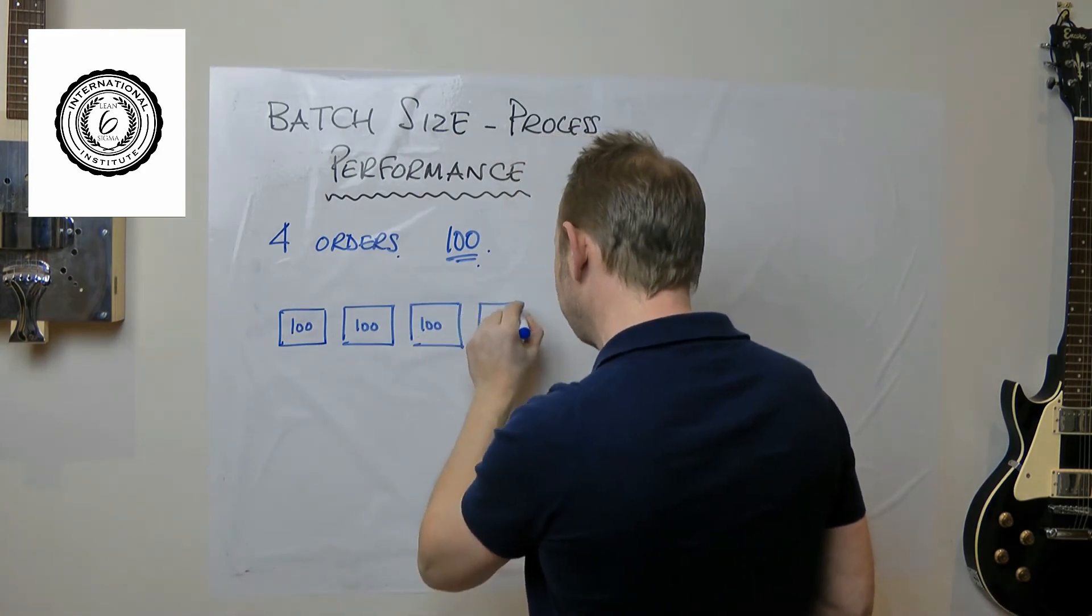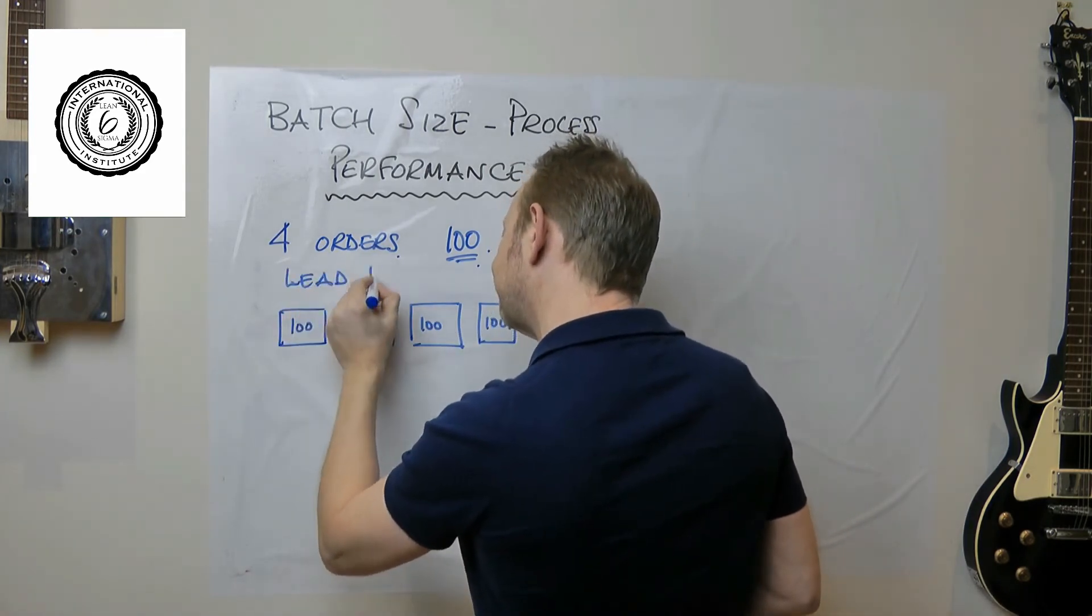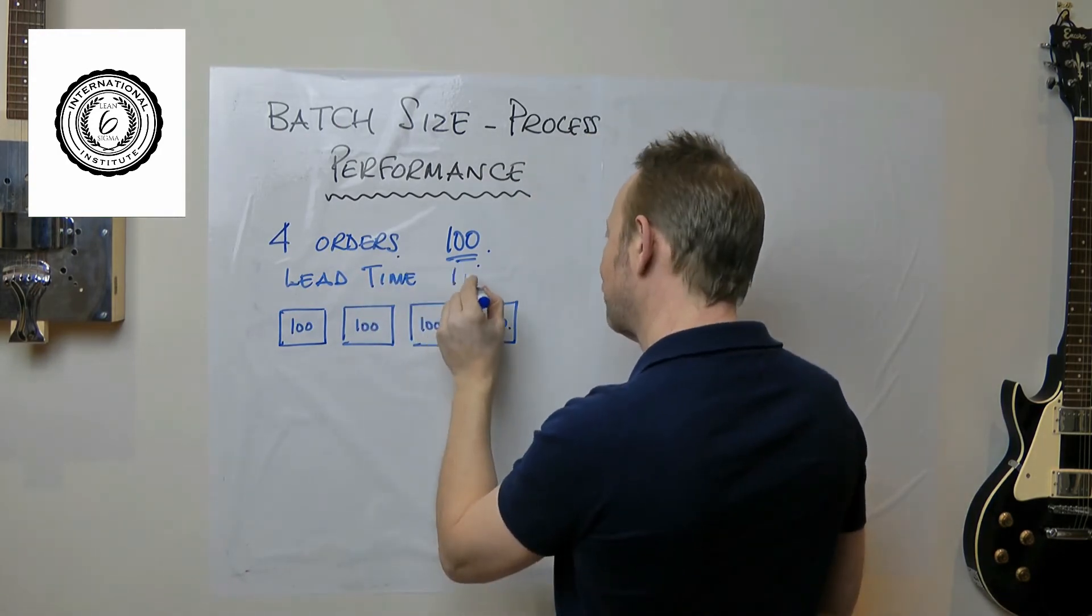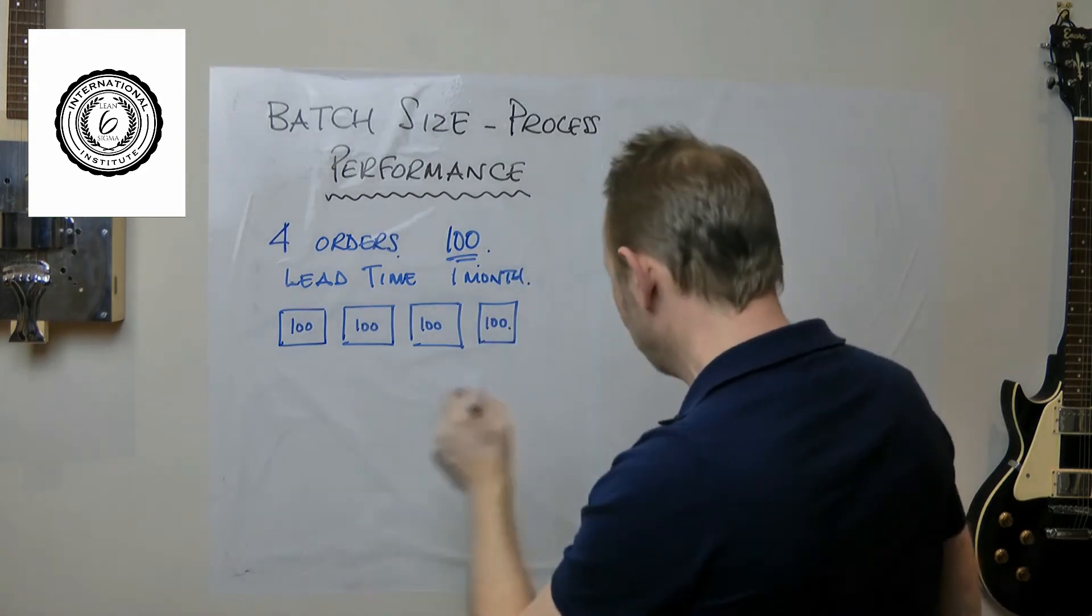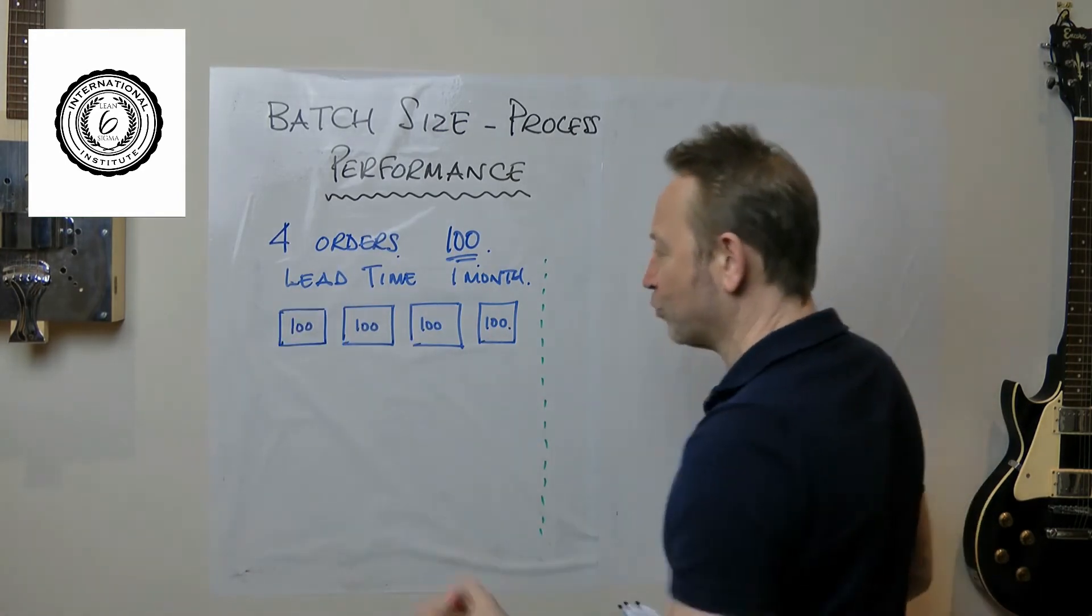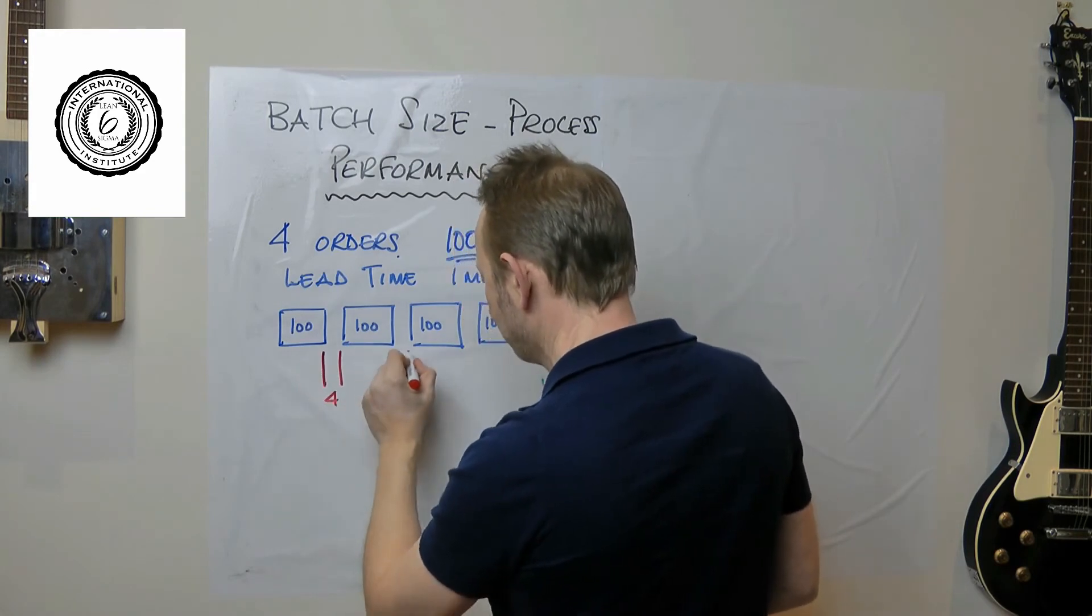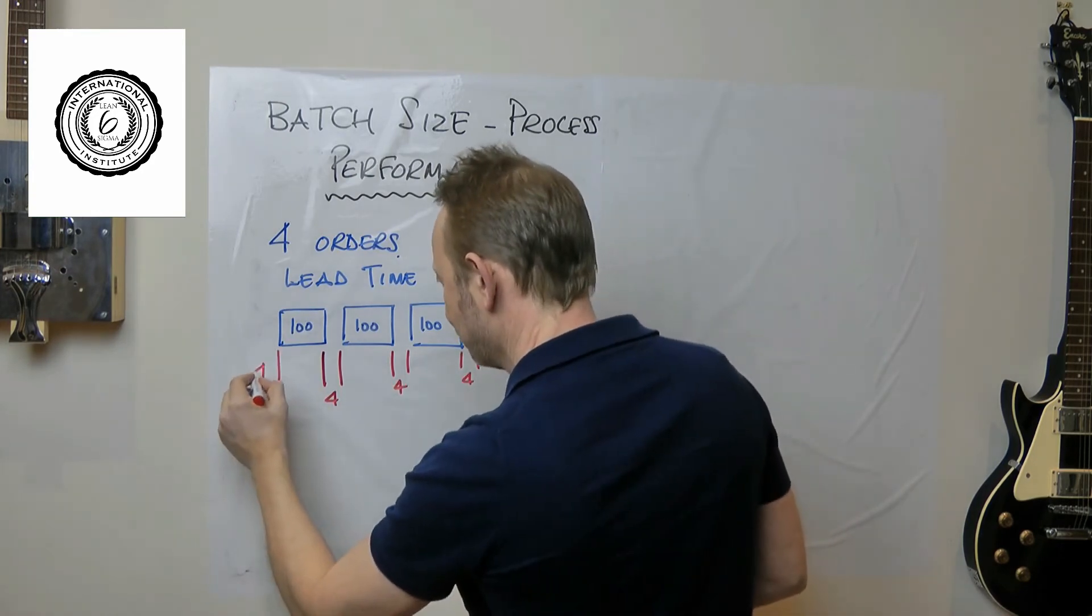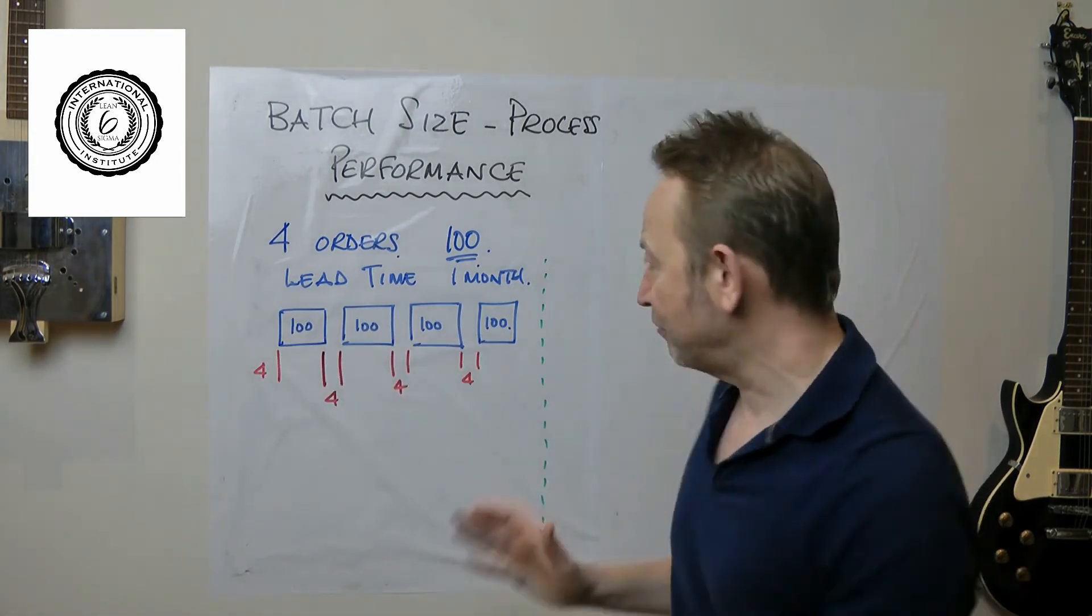The planning system would generate this situation where the four orders would be produced in batches of a hundred, one behind the other. We're also going to suggest that we are promising the customer a lead time of one month. If we make those four orders like that, we get the four orders out in the specified lead time. The setup time is four hours, so we get the orders out.